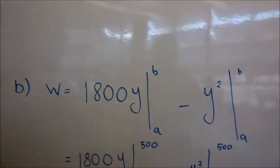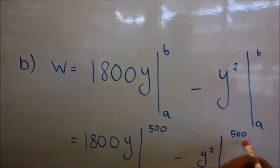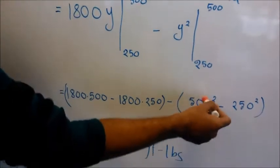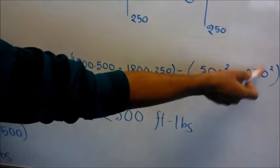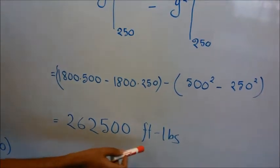For part B, our limit is 250 to 500. Fundamental theorem of calculus: 500 squared minus 250 squared. We get 262,500 foot-pounds.